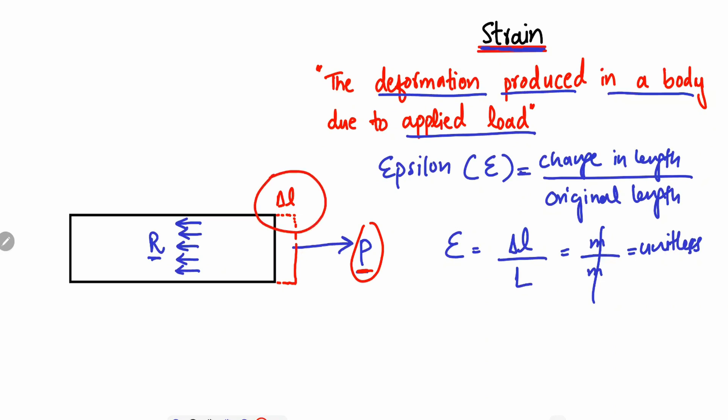These changes are related to strain. If I call L the original length of the object, and delta L the change that happened, then strain can be defined as delta L (the change) divided by the original length L.